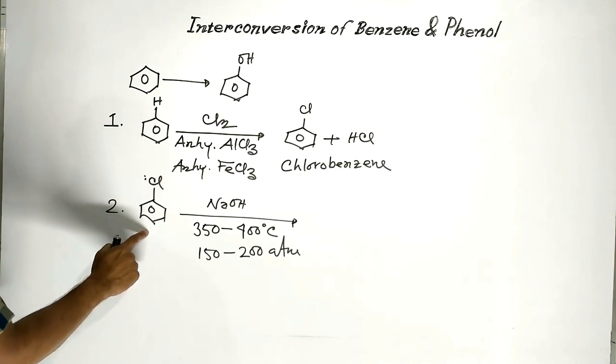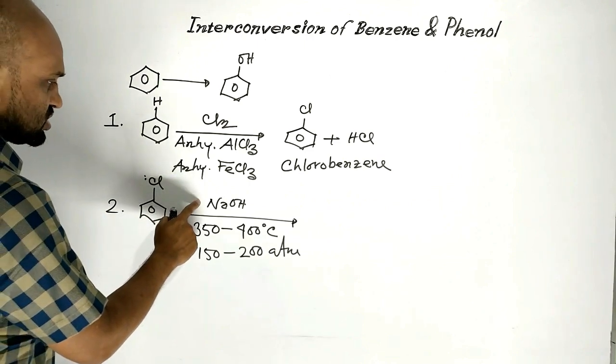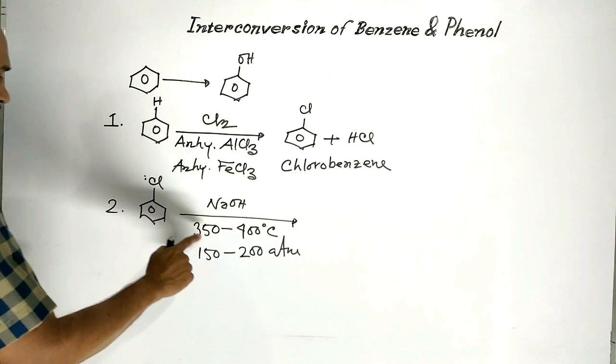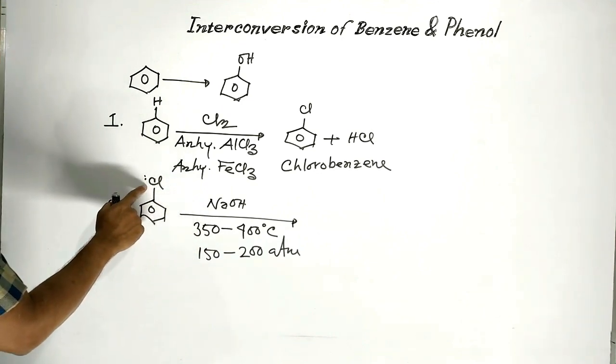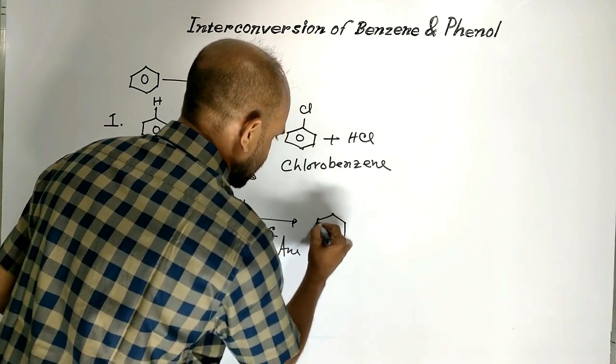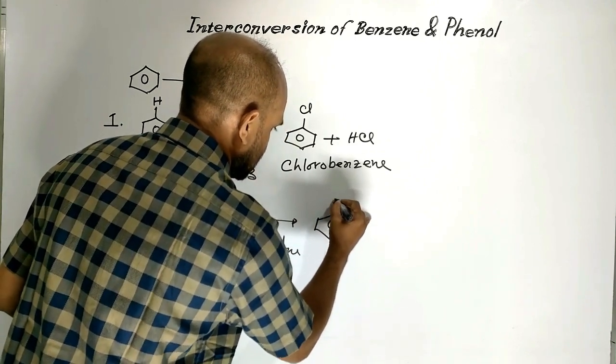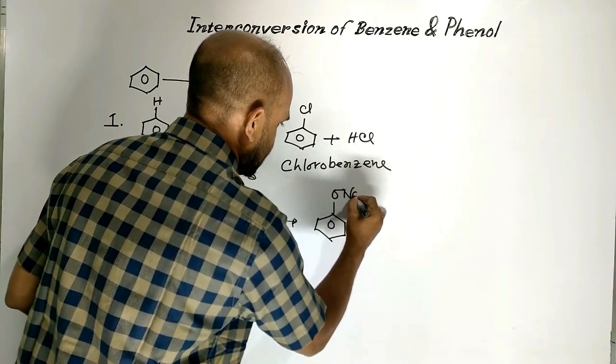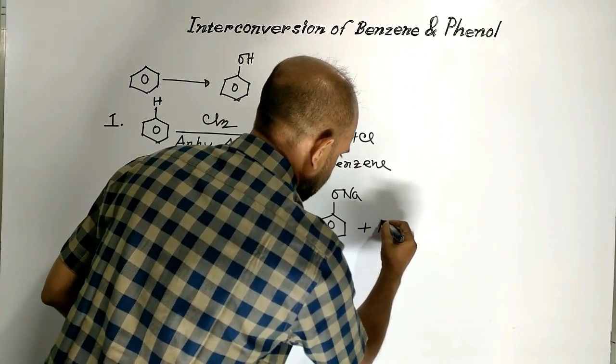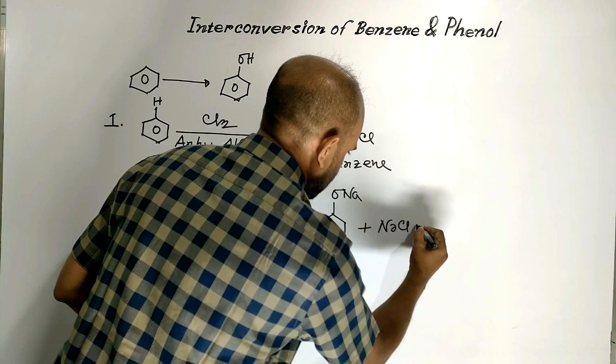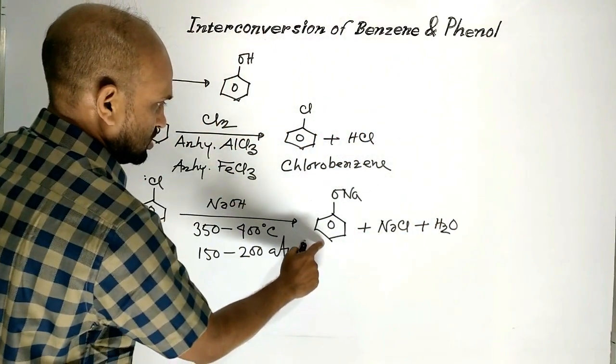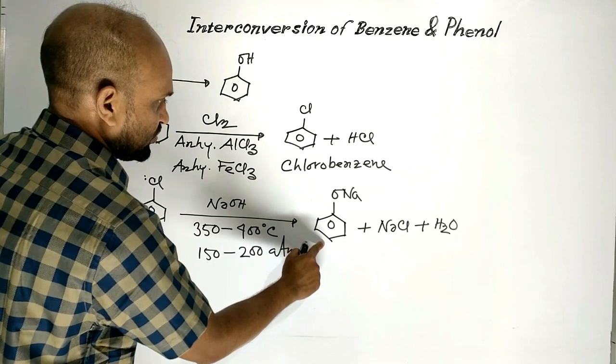When chlorobenzene is treated with sodium hydroxide in presence of drastic condition, then chlorine of chlorobenzene is replaced by ONa. Here by-products are sodium chloride and water. This is sodium phenoxide.